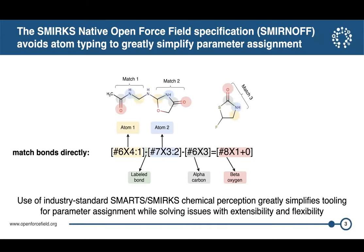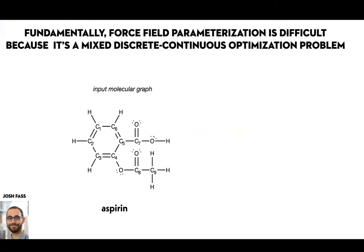As all of you know, the SMIRNOFF specification — the SMIRKS-native Open Force Field specification — describes not just a single atom, but a bond, angle, torsion, or any kind of valence type by assigning a whole SMIRKS string to it, where you've tagged the atom or atoms of interest describing a bond with a certain chemical environment. It's an industry standard and really great — it has allowed huge compression of chemical perception from atom types. There are many advantages David Mobley has talked about in the past, but it does present challenges.